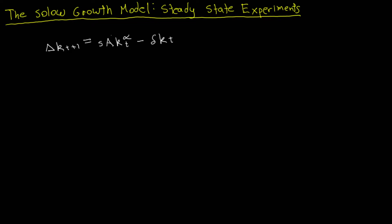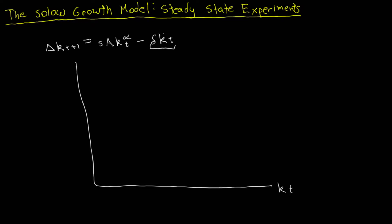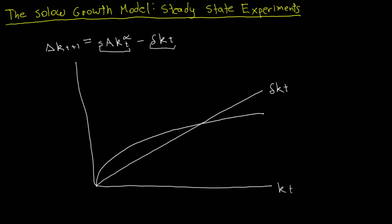Now I'd like to graph these two functions on the right-hand side — investment and depreciation — on the same graph. On the horizontal axis we have capital per capita, and the vertical axis represents multiple variables. Depreciation, delta times k_t, is a linear function: a straight line starting at the origin with slope equal to delta. Investment, the savings rate times the production function, has a shape like the square root of x because alpha is between 0 and 1.